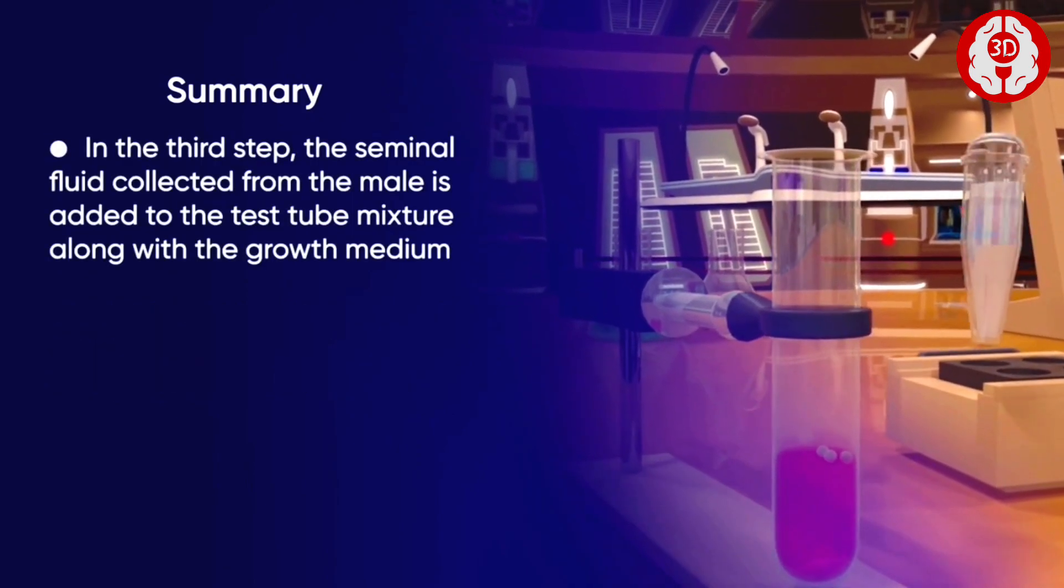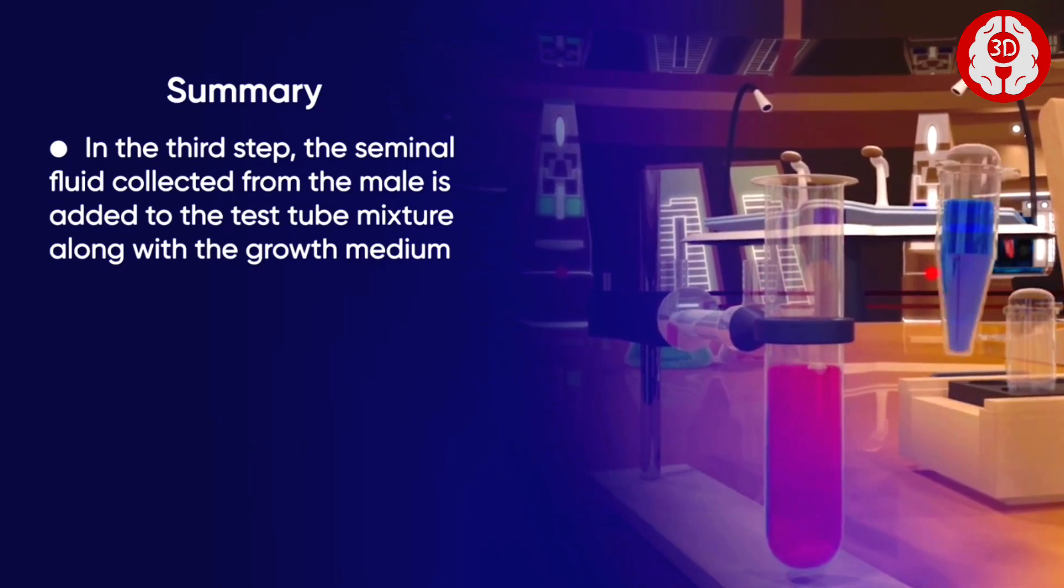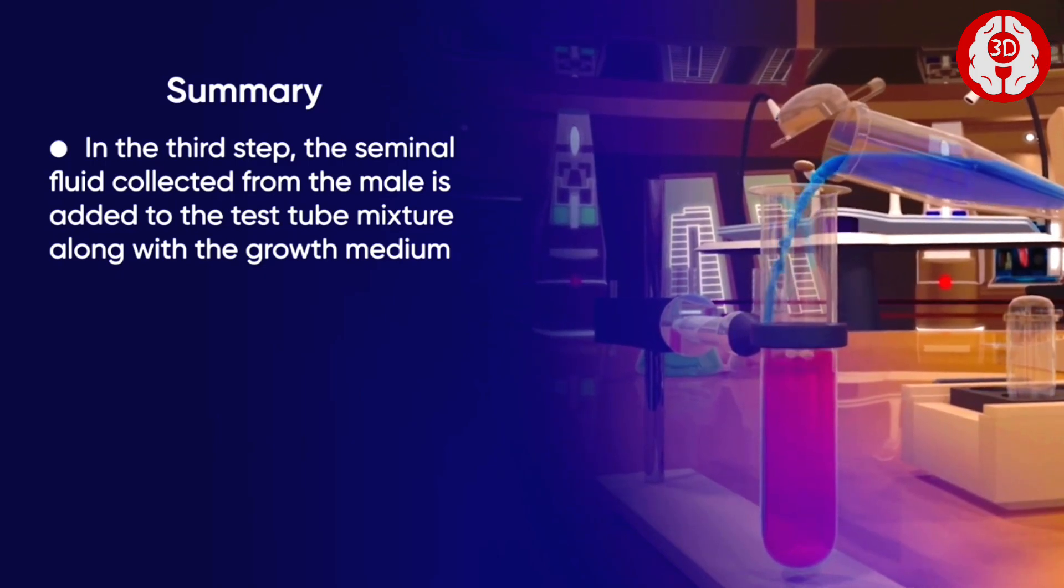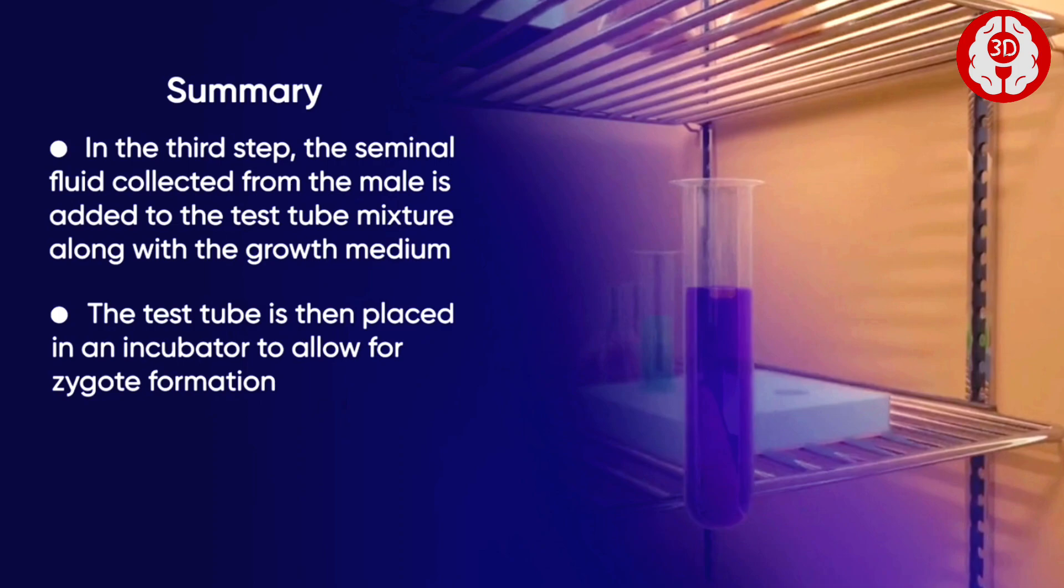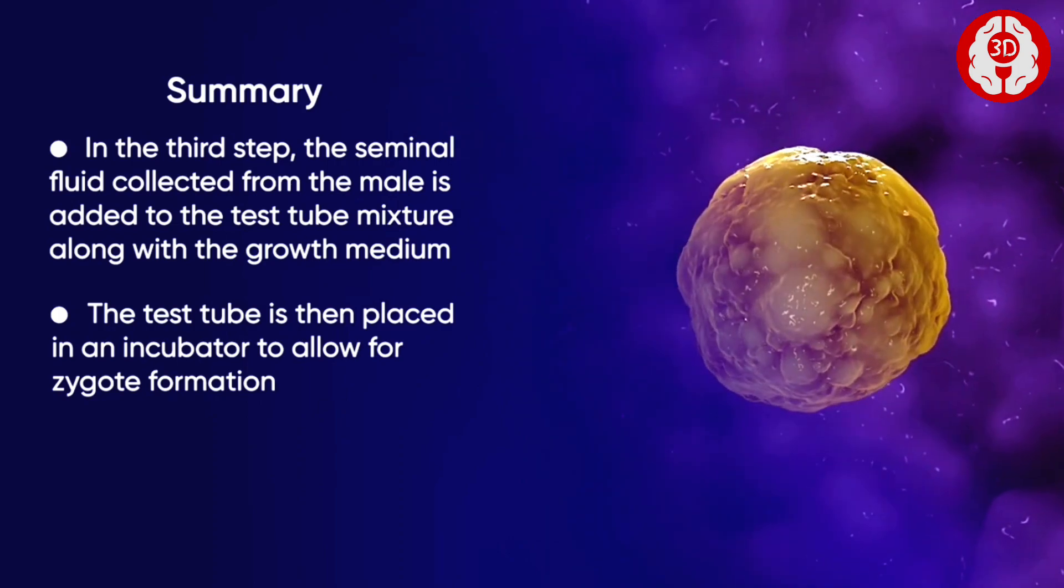In the third step, the seminal fluid collected from the male is added to the test tube mixture along with the growth medium. The test tube is then placed in an incubator to allow for zygote formation.